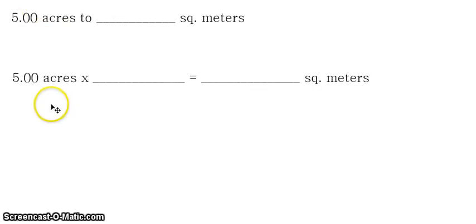So again, we have to remember that we have three key tasks to always keep in mind when solving problems using dimensional analysis. That is to start with what is given, which is 5.00 acres.